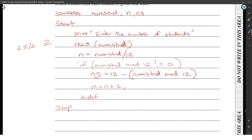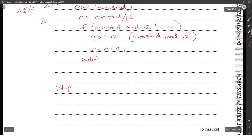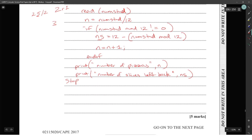Testing: 25 divided by 12 gives two pizzas, but remainder is 1, so we increment to three pizzas. Slices remaining: 12 minus 1 equals 11. Finally, print the number of pizzas (n) and print the number of slices left back (ns). That's the complete algorithm.